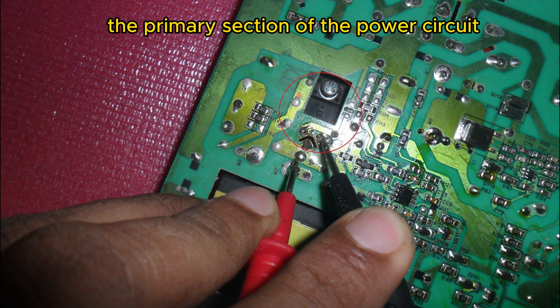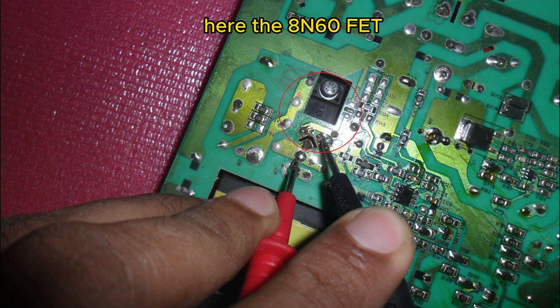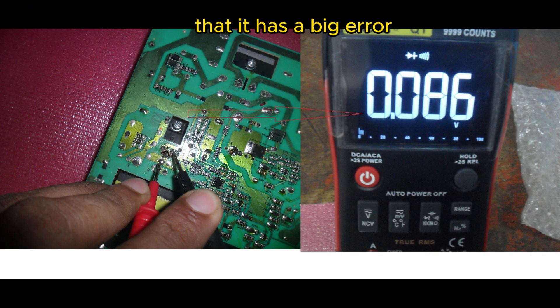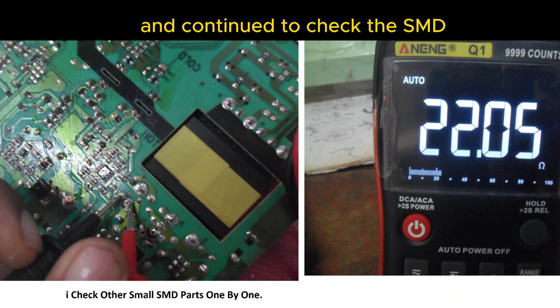Next I started testing the primary section of the power circuit here. The 8N60 FET which is the supply power MOSFET was checked and it was noted in the multimeter that it has a big error. I took it apart and continued to check the SMD and other components thoroughly. No other errors were found.